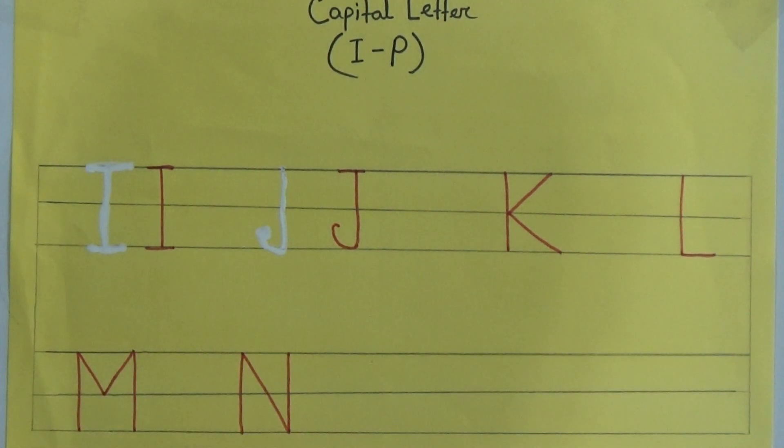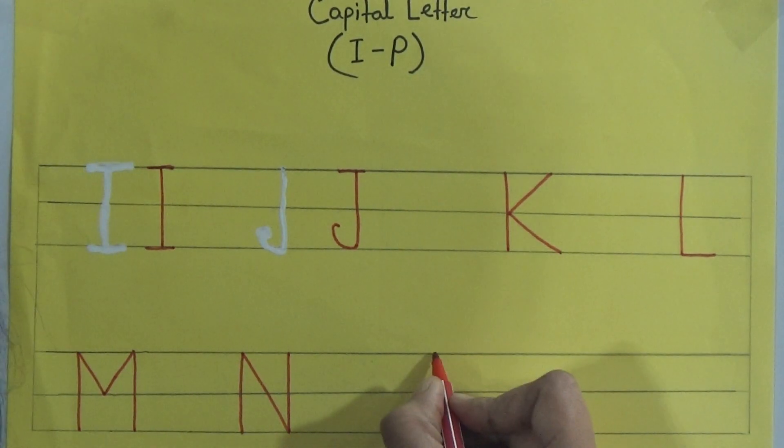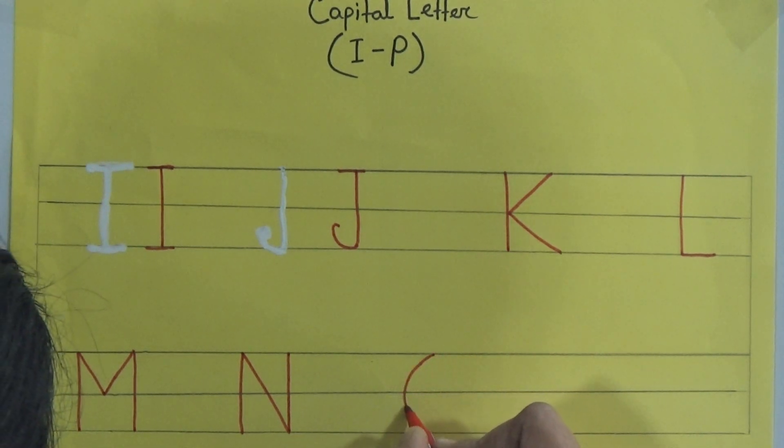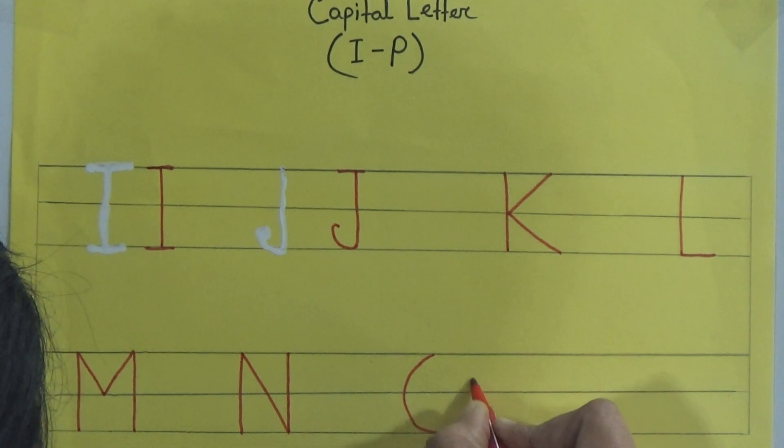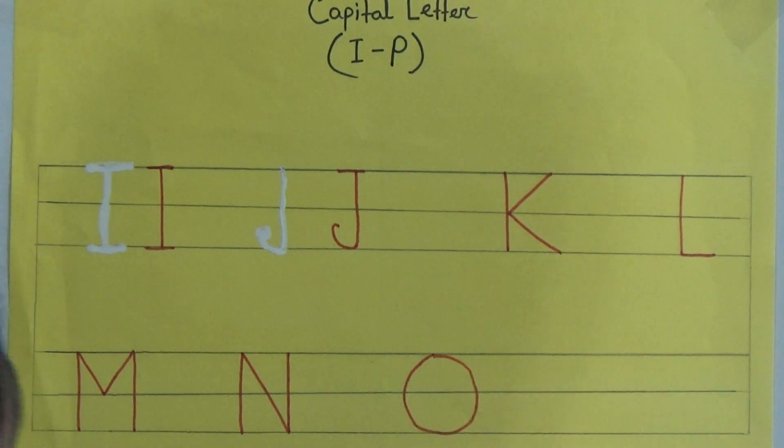I, J, K, L, M, N, O. So start from the top and draw a big circle to the left. That makes O.